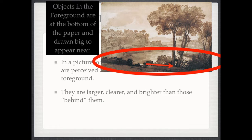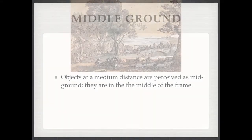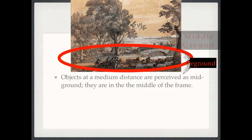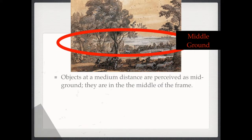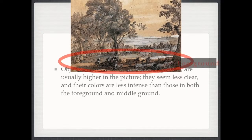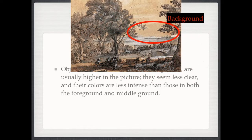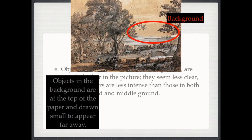Notice the tree that starts in the foreground is so big it goes all the way up to the top of the paper. The middle ground is the middle of the paper — foreground at the bottom, middle ground in the middle — this is where objects start to appear further away. The background is the furthest away from the viewer; objects are drawn smaller and blurrier, and you can't see a lot of details.